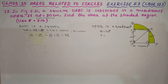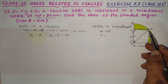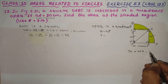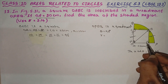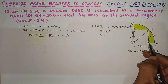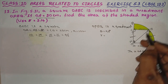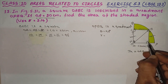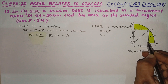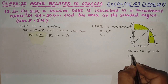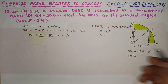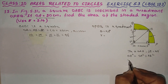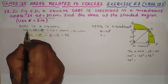This is the radius. I will join O and B to make triangle OAB. Triangle OAB — angle OAB is equal to 90 degrees. By using the Pythagoras theorem, I will find the OB value.